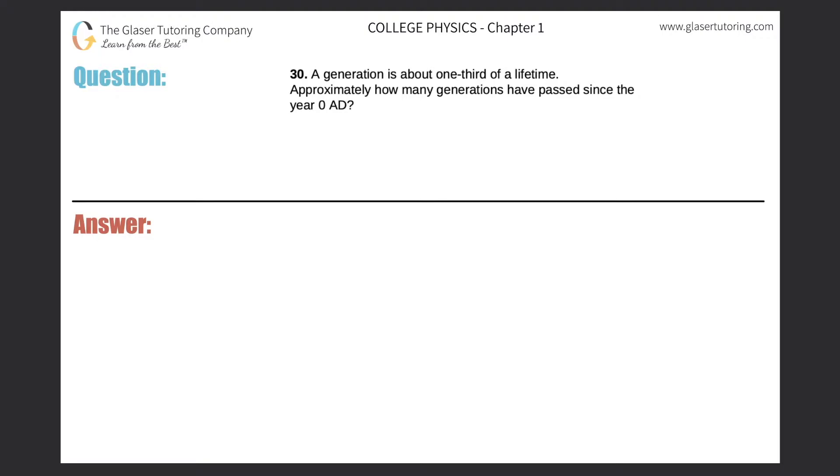Number 30. A generation is about one-third of a lifetime. Approximately how many generations have passed since the year 0 AD?